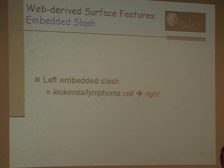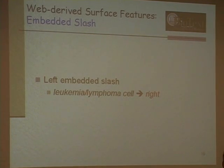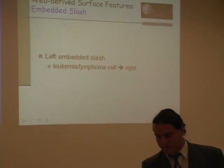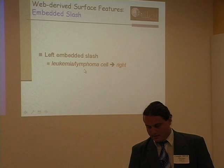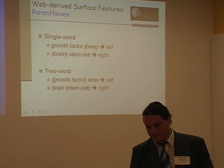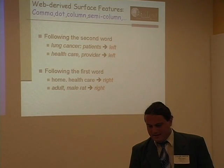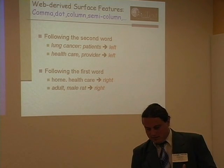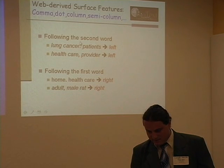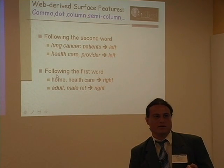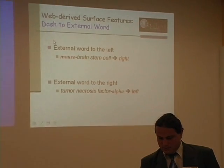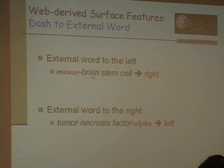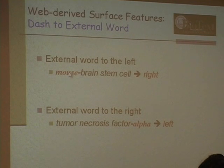Another feature: for 'leukemia lymphoma cell,' finding 'leukemia/lymphoma cell' with a slash signals right bracketing, since leukemia cannot modify lymphoma if they're alternatives. Different bracket types can also signal structure. Even punctuation inside n-grams can be weak predictors of bracketing direction. You can also look at surrounding context: 'mouse brainstem cell' suggests brainstem and cell go together, implying right bracketing.